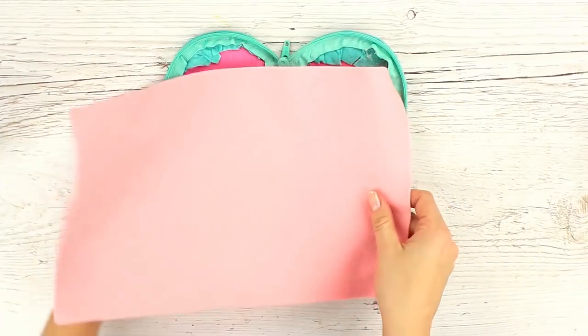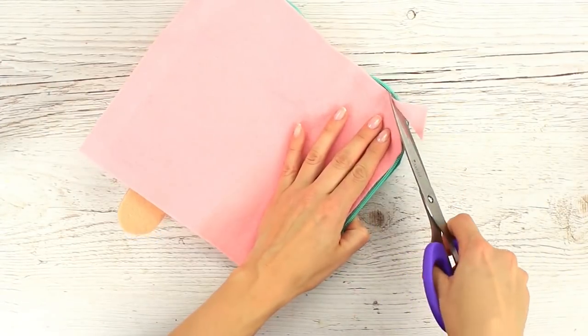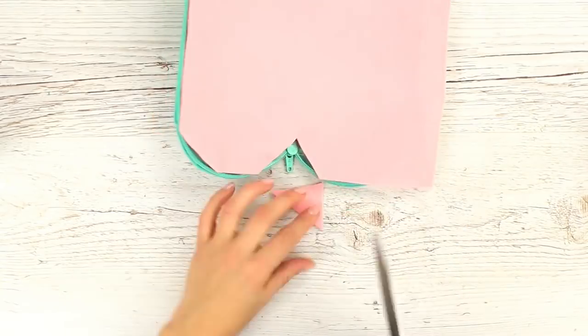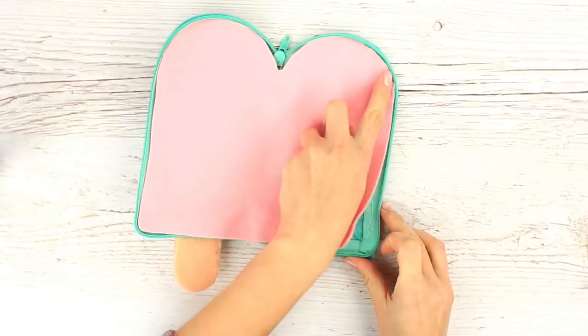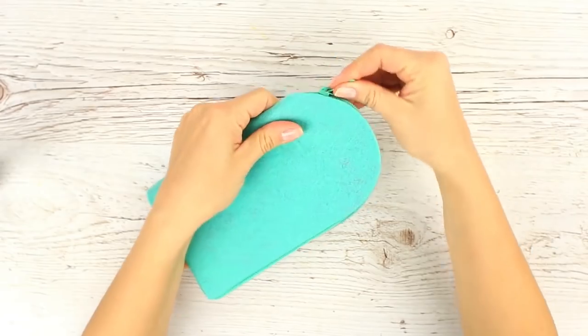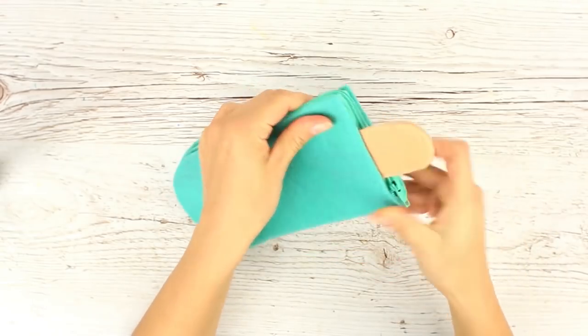Cover the inside with pale pink felt. Cut out the detail fitting the open case. Attach it to the base. Check how it works.